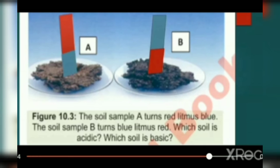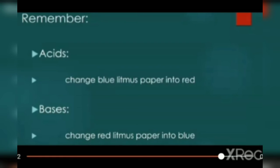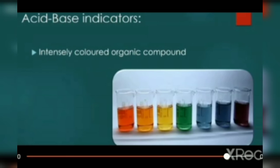Can you tell me? Yes, base will turn red litmus paper to blue. So the red litmus paper sample A turns blue, it is basic. Remember: acid changes blue litmus paper into red while bases change red litmus paper into blue.